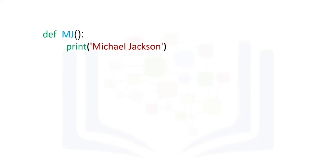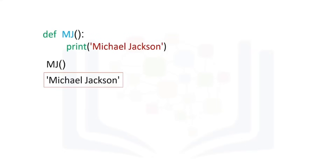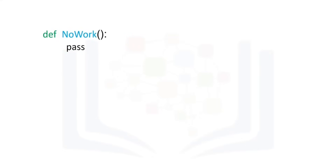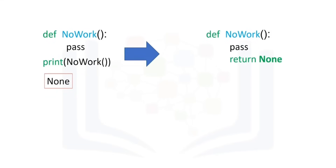In many cases, a function does not have a return statement. In these cases, Python will return the special None object. Practically speaking, if your function has no return statement, you can treat it as if the function returns nothing at all. The function mj simply prints the name Michael Jackson. Python doesn't allow a function to have an empty body, so we can use the keyword pass, which doesn't do anything but satisfies the requirement of a non-empty body. If we call the function and print it out, the function returns a None. If the return statement is not called, Python will automatically return a None.